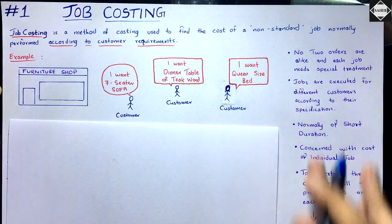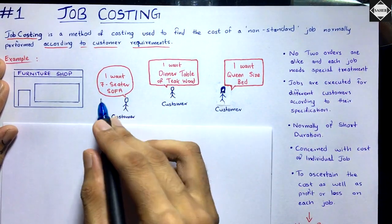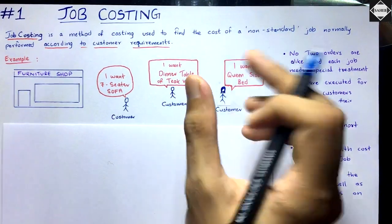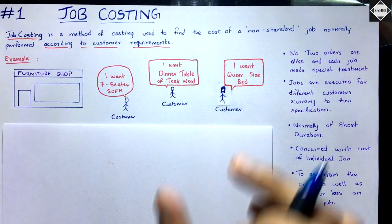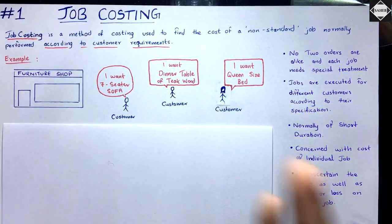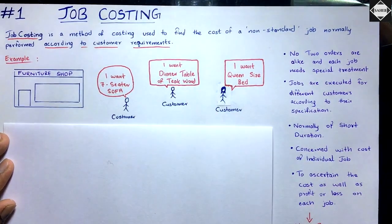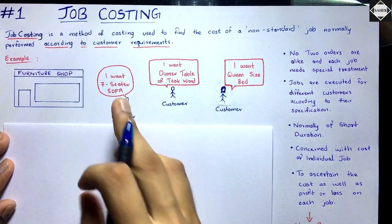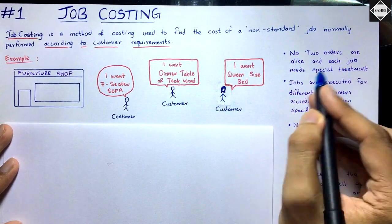Here are some key features: no two orders are alike, and each job needs special treatment. Each job is given a specific number — like at a tailor shop where your receipt has an order number such as 2256. Similarly, in the furniture shop, each customer's job is assigned a job number — job number one, two, three — and all expenses incurred for that job are collected under that number.